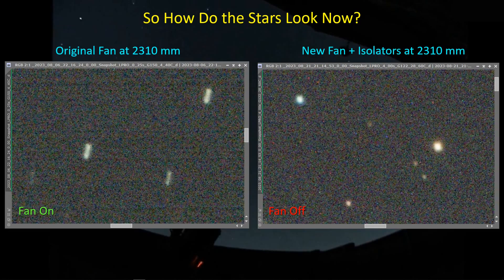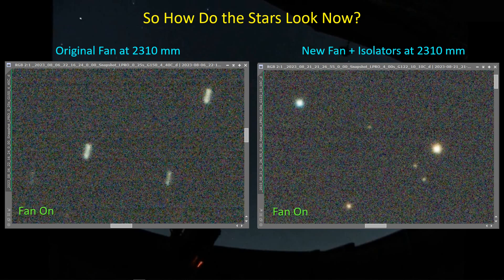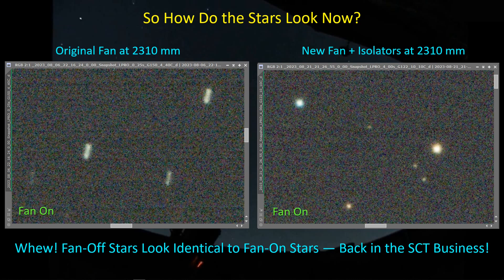The image on the left shows the streak stars I was getting; on the right, the stars I'm getting with the fan turned off. With the new fan and isolators installed, I'm back to getting round stars — but that's with the fan off. When you turn on the fan, going back and forth between fan off and fan on, the stars are basically unchanged. That's a huge relief — it looks like I don't have an actual problem inside the OTA, and my fan-off and fan-on stars look almost identical. I'm back in the SCT business now.